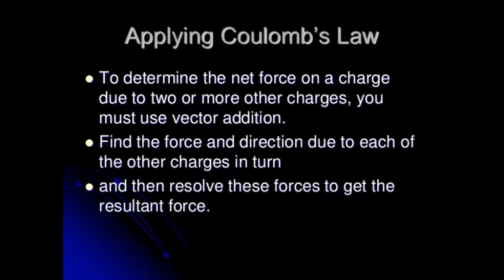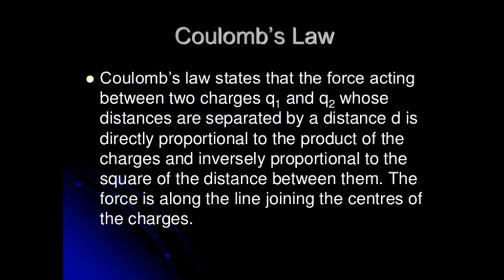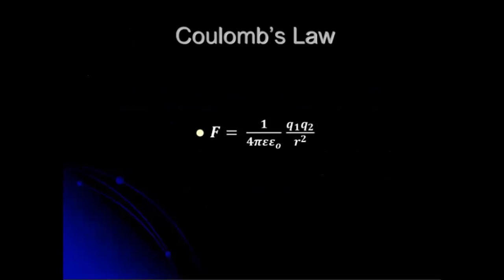To determine the net force on a charge due to two or more other charges, you must use vector addition. Find the force and direction due to each of the other charges in turn, and then resolve these forces to get the resultant force. Coulomb's Law states that the force acting between two charges Q1 and Q2, separated by a distance d, is directly proportional to the product of the charges and inversely proportional to the square of the distance between them. The force is along the line joining the centers of the charges.